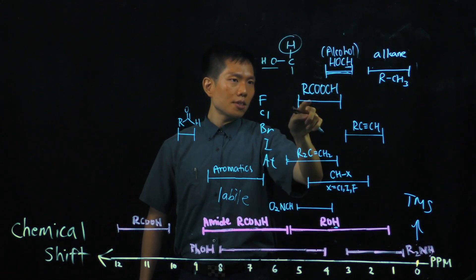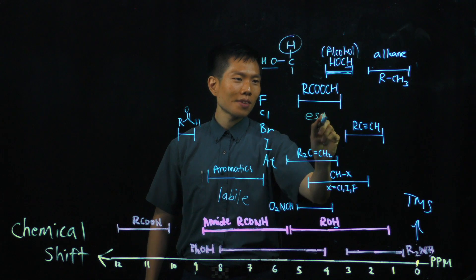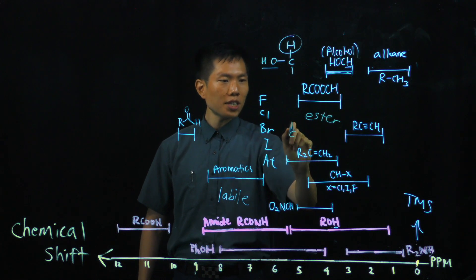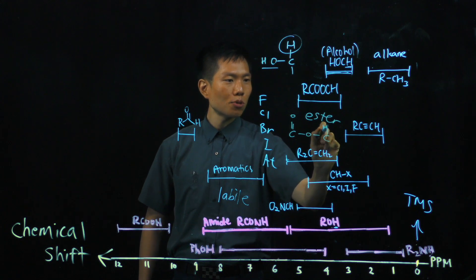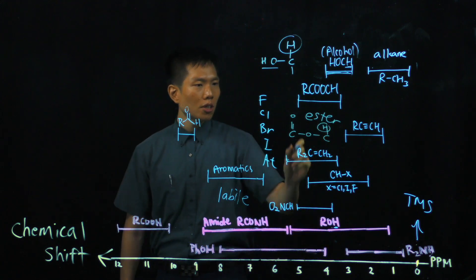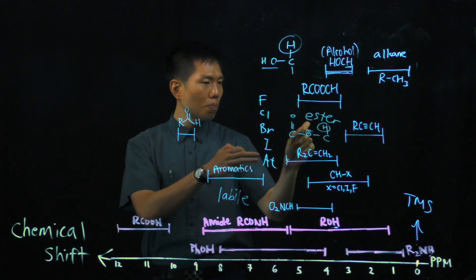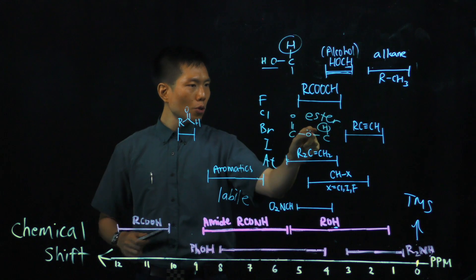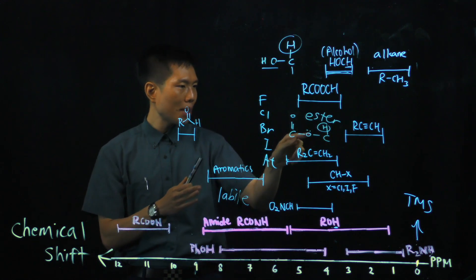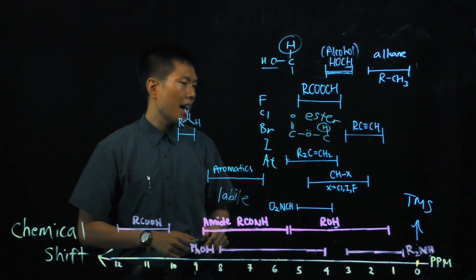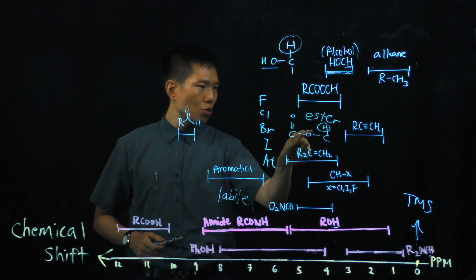Up next, this is a COOR, which is an ester. Ester, when you draw this out, it is CO double bond, OC. So that's the proton we refer to. Now, lone pair on this oxygen can somewhat be donated through the sigma bond here. So although it pulls the electrons away, at the same time, it also donate via through the bond.